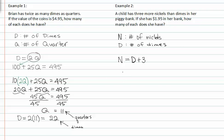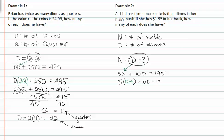Now that we've done that, we can write an equation stating that there's a value for nickels which is five, times the number of nickels, plus the value for dimes which is ten, times the number of dimes she has, and that's equal to one hundred ninety-five cents. Taking d plus three and substituting it in for n, we now have five times (d plus three), plus ten times d, is equal to one ninety-five.